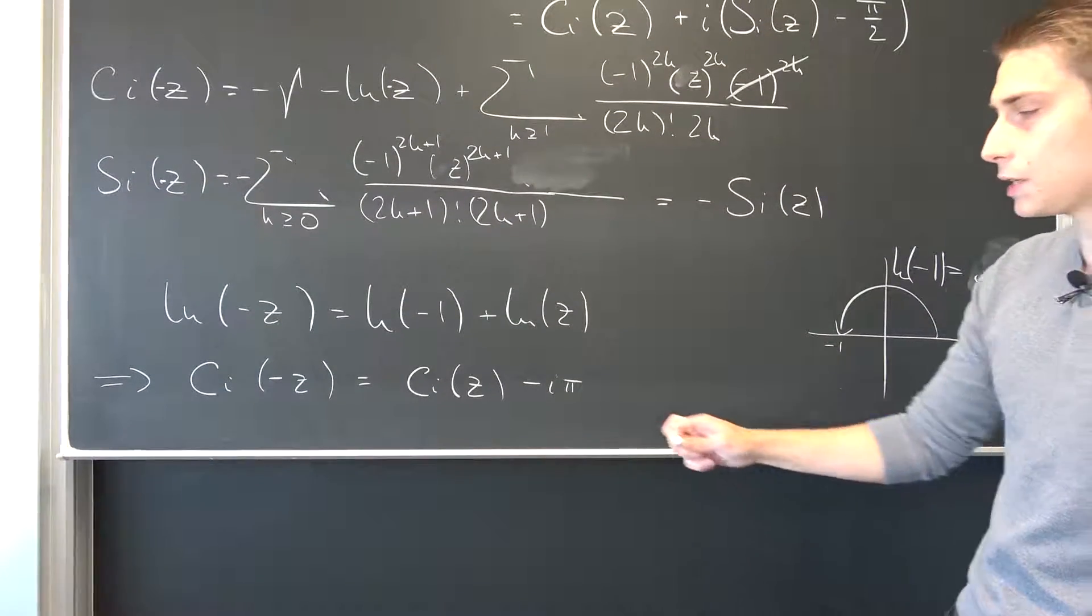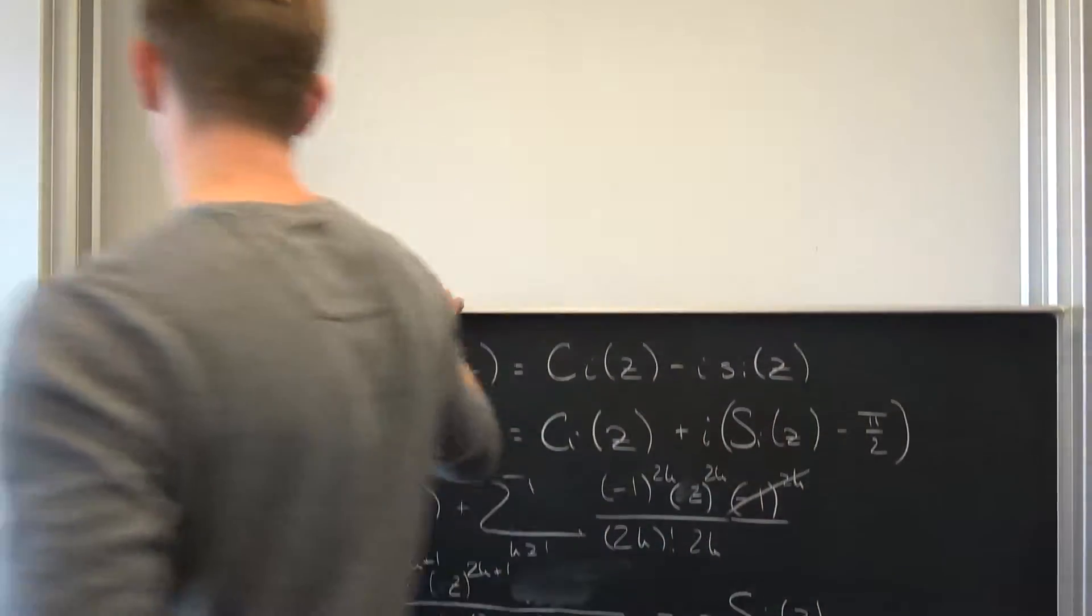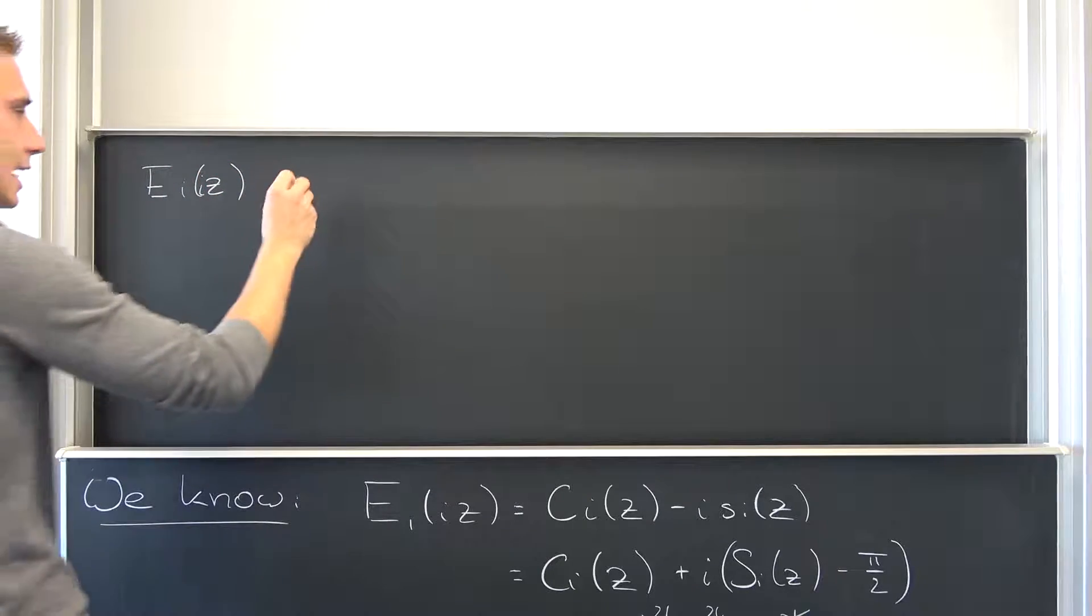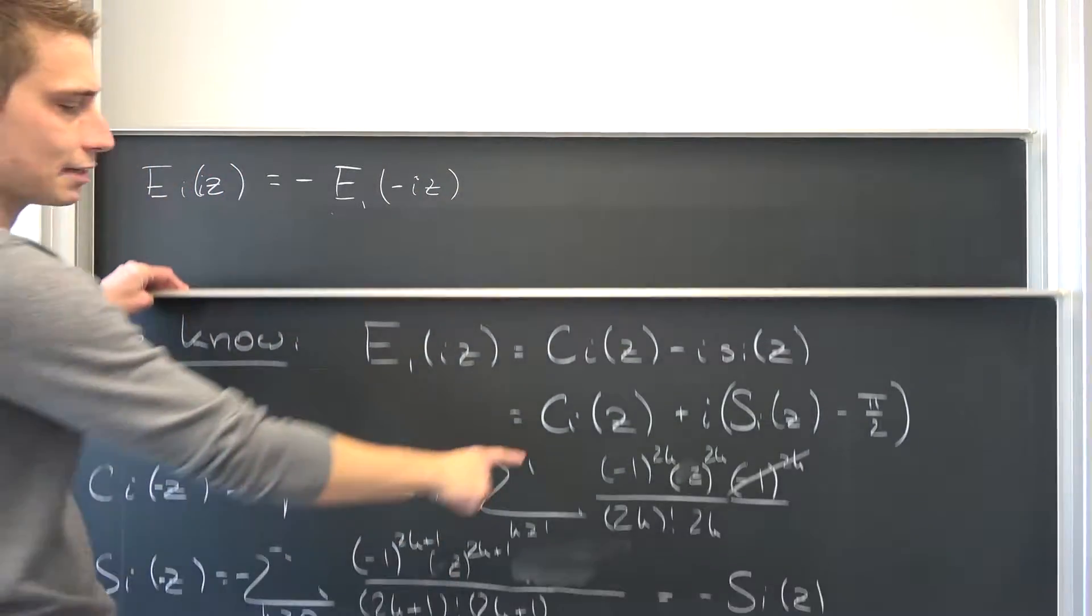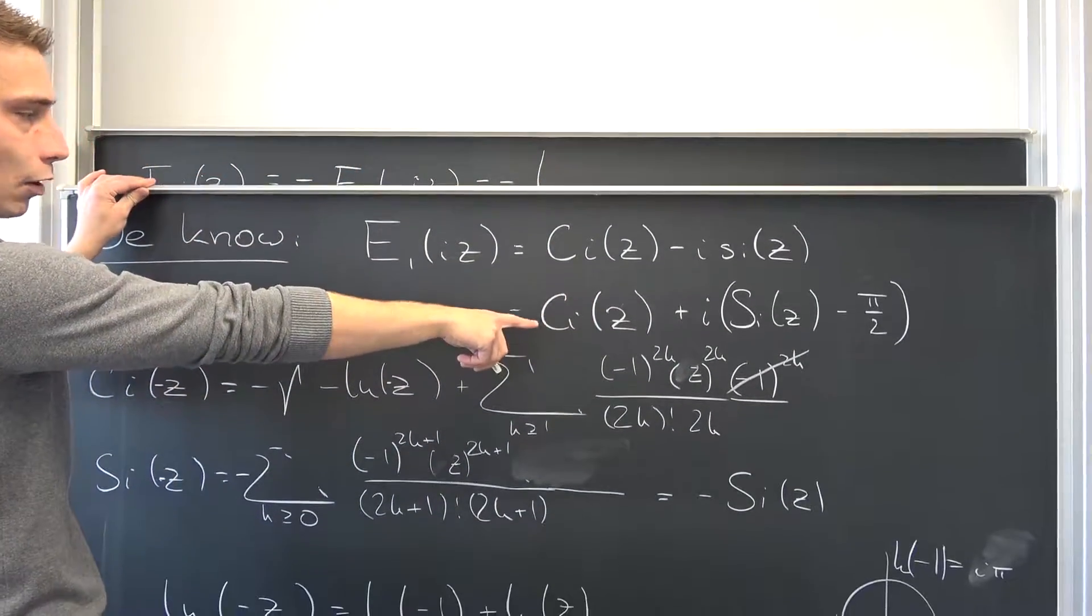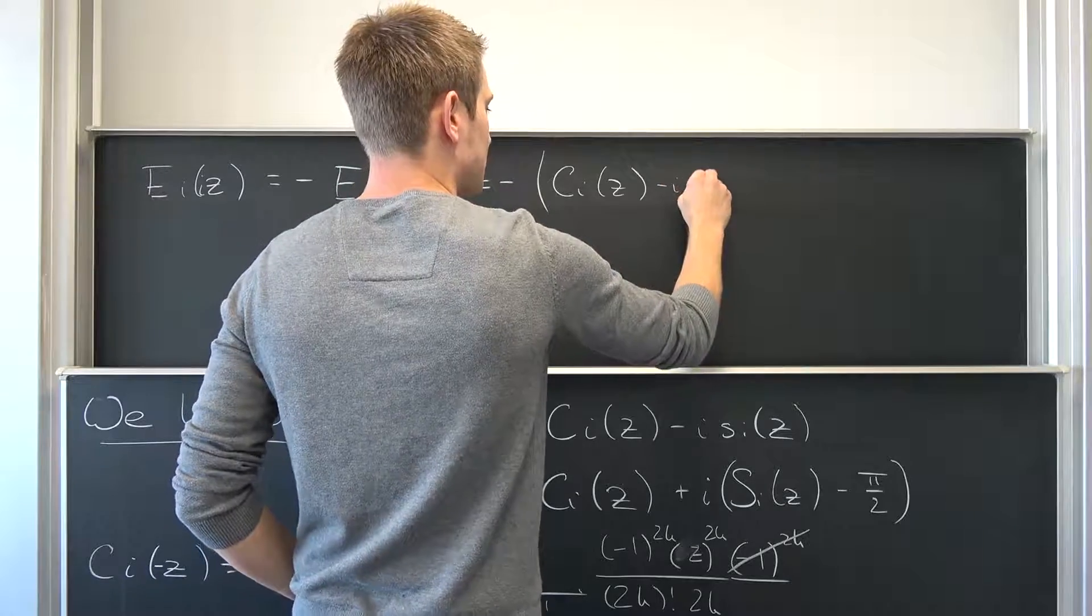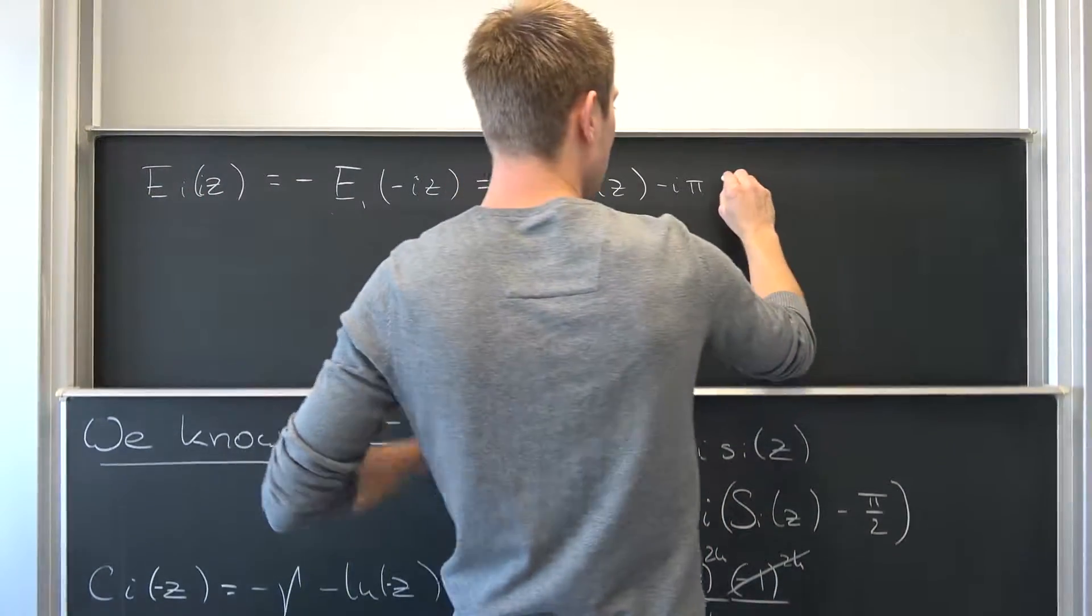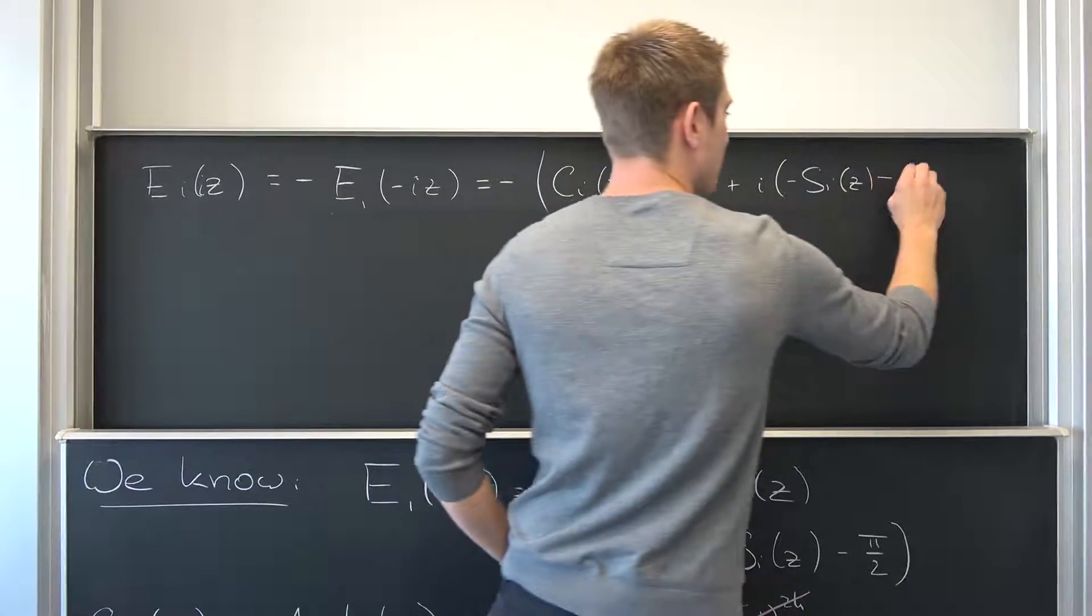This right here is Ei of iz. Our Ei of iz in this case has been nothing other than negative E1 of negative iz. And this does, by this definition - I'm going to put everything here negative - Ci of negative iz is thus going to deliver the cosine integral of z minus i times pi, and also plus i times Si of z plus i times negative Si of z minus pi over 2.